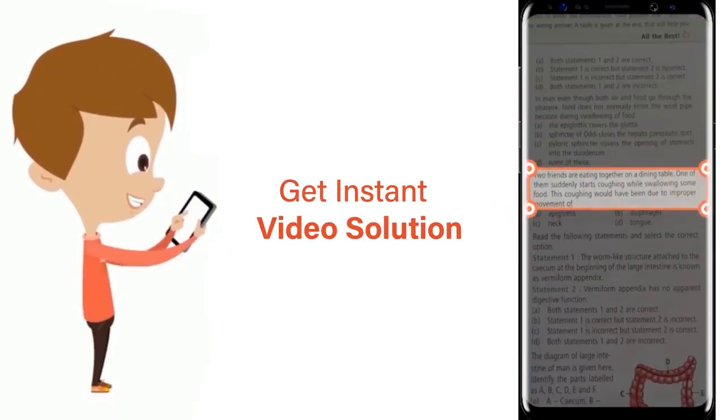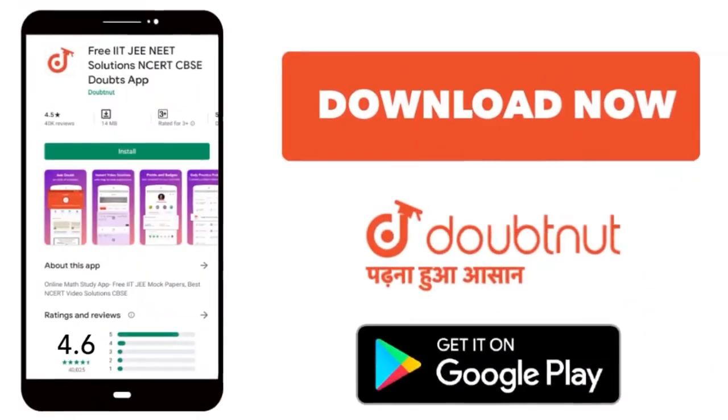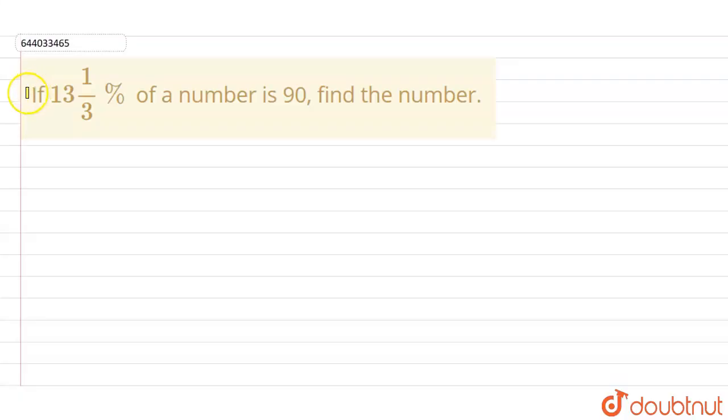Crop the question and get an instant video solution. Download the Doubtnet app today. Our question is: if 13 whole 1/3 percent of a number is 90, find the number.